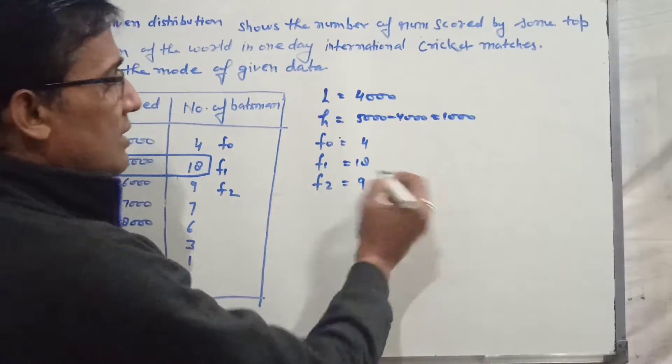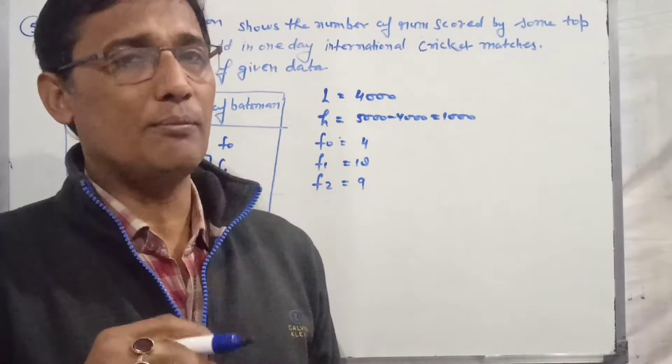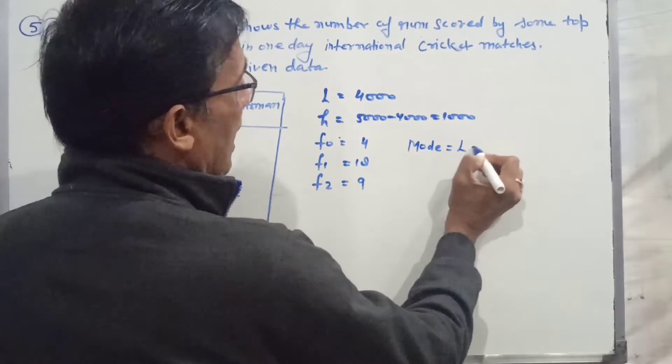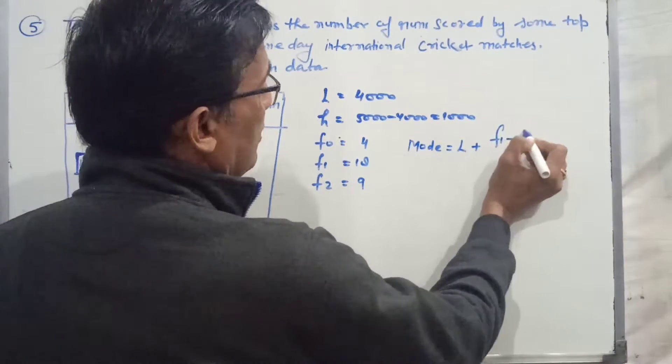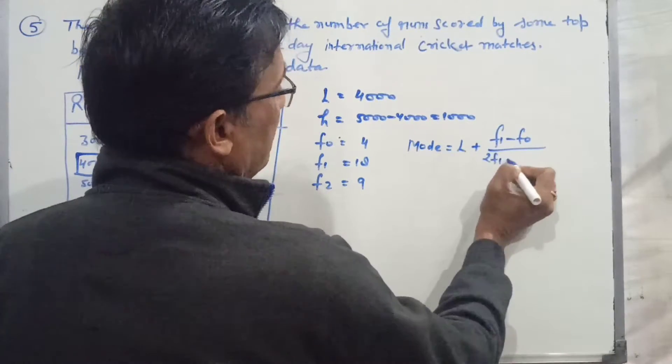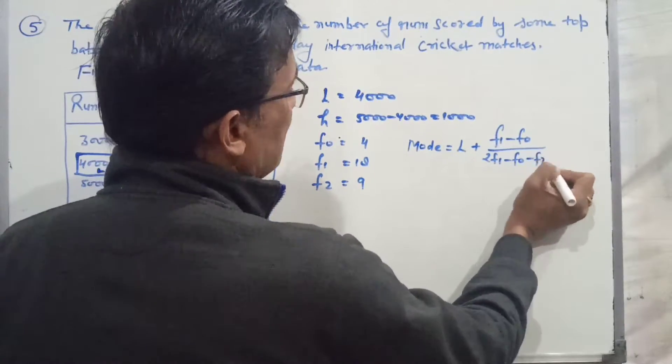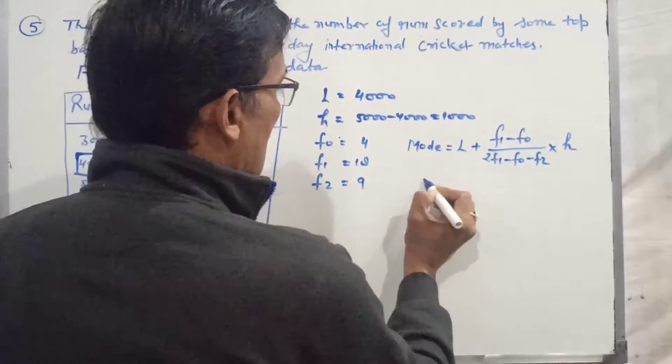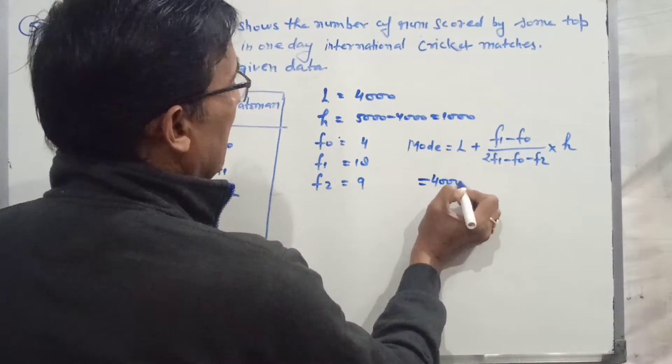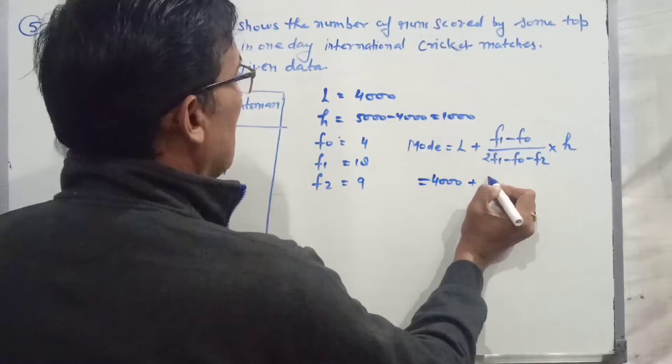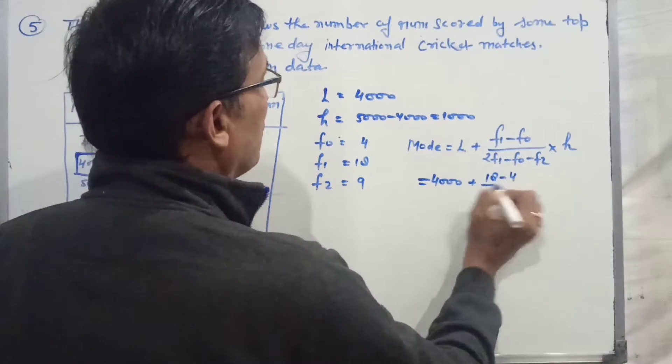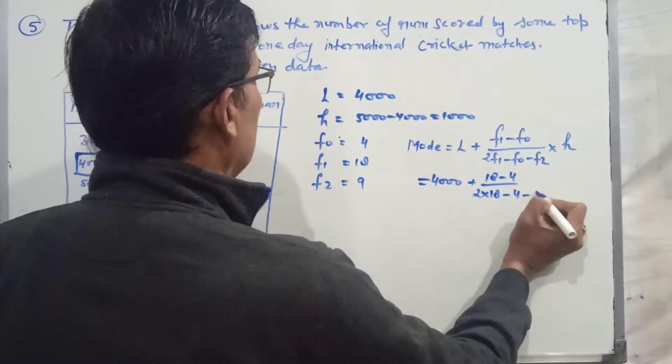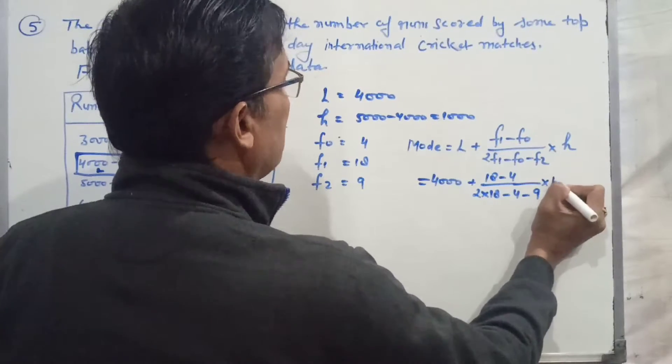The mode formula is: mode equals L plus (f1 minus f0) divided by (2f1 minus f0 minus f2) times H. Now substituting the values: L equals 4,000, f1 equals 18, f0 equals 4, and f2 equals 9.